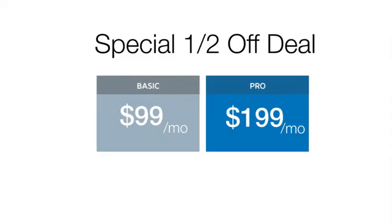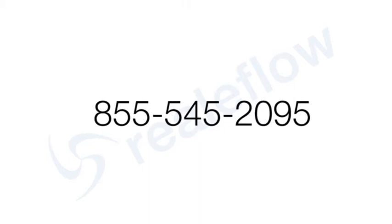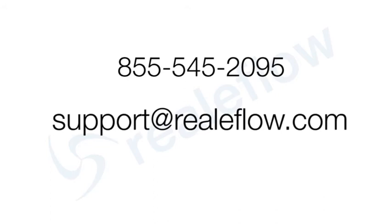You can pick from the basic or pro versions, so just pick the one that you think makes the most sense for your business. We're also going to give you a special half off deal on whichever version you choose after the 30-day trial. The basic version is only $49 a month and the pro is just $99 a month. But remember, you pay nothing now and it's super easy to cancel if you decide that it's not for you. Call us toll free at 855-545-2095 or email us at support@realflow.com. We do ask for a valid credit card number to reduce fraud, make sure we're dealing with real people, and to ensure we have a valid card should you keep your account open past the 30-day trial.